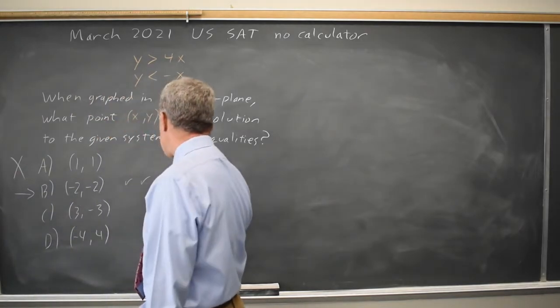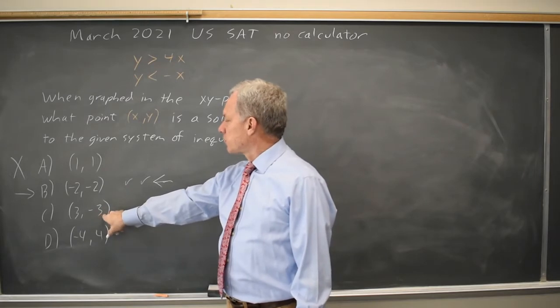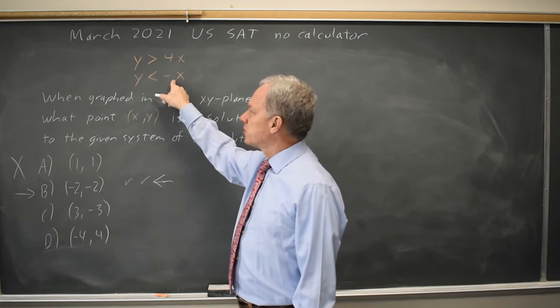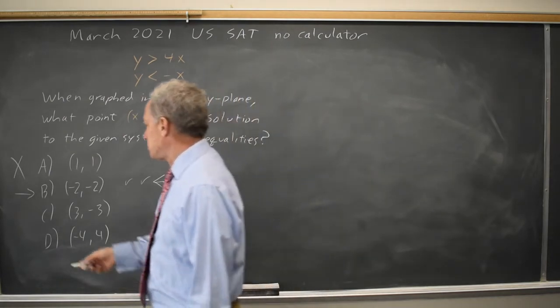Just for thoroughness, let's try the other two. Choice C, Y equals -3. Is that less than the negative of positive 3? -3 is equal to -3. It's not less than, so choice C does not work.